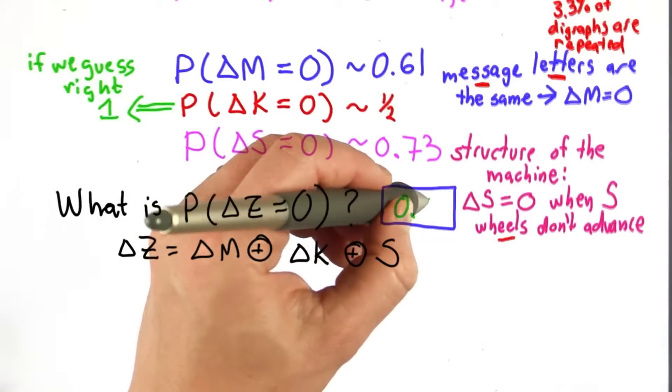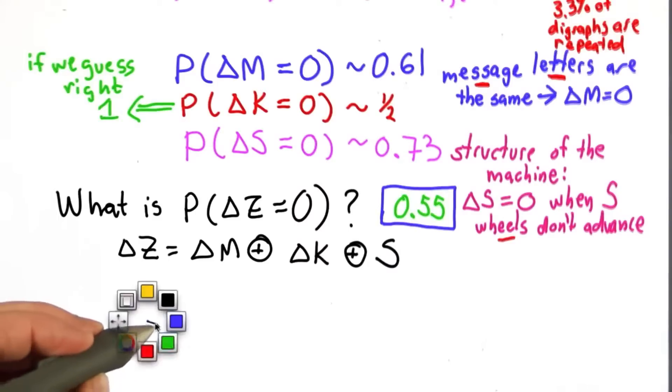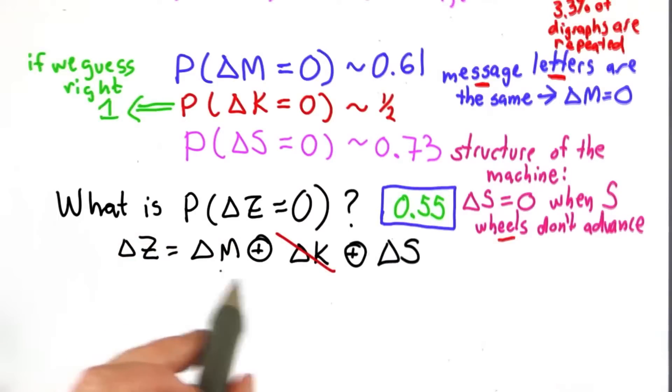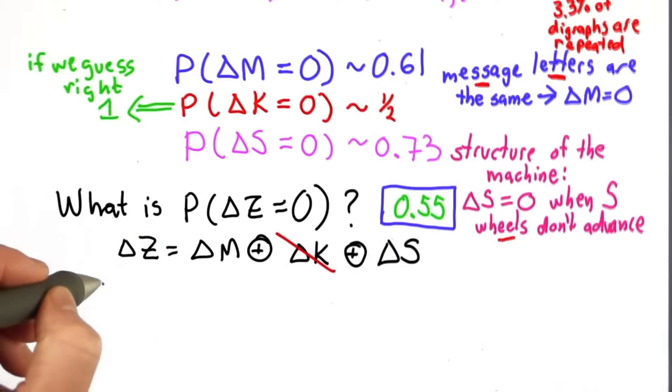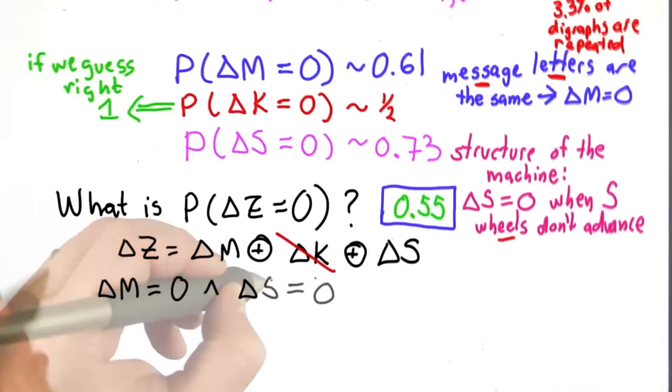The answer is 0.55, so the key is 0. We can cancel that out. So we're left with delta M XOR with delta S. That could be 0 either if delta M is equal to 0 and delta S is equal to 0. Then the XOR of 0 and 0 would be 0.